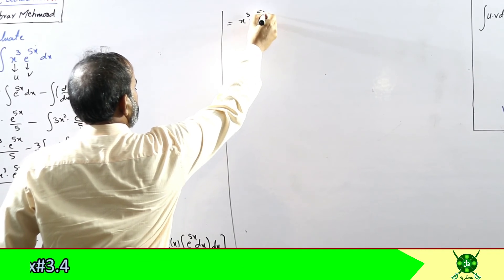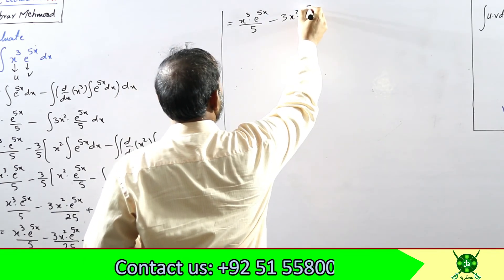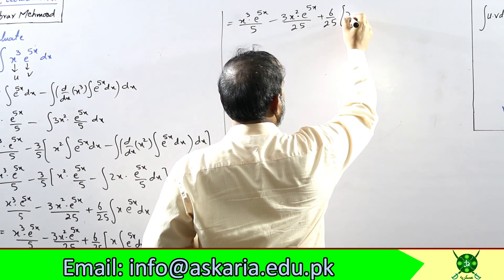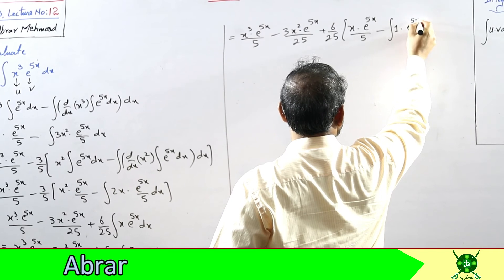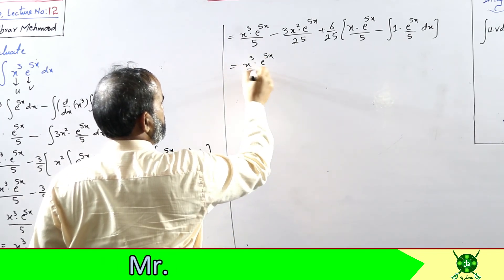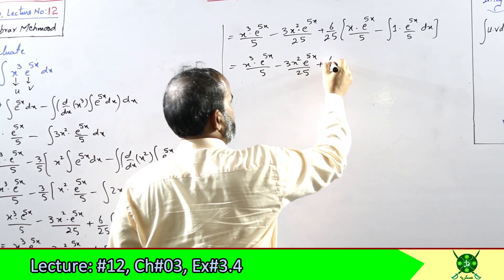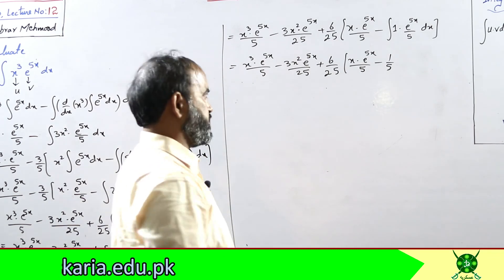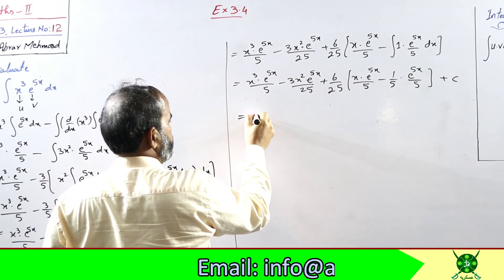x³·e^(5x)/5 as it is minus 3x²·e^(5x)/25 plus 6/25 · [x·e^(5x)/5 minus x का derivative 1 हो गया और आगे e^(5x)/5 dx]। यहां से 1/5 बाहर आगया, e^(5x) बचा तो e^(5x) की integration e^(5x)/5 होगी plus c। bracket open करें - यह final answer है।